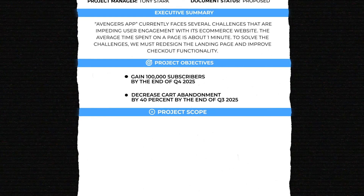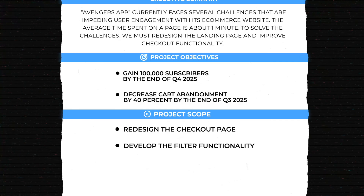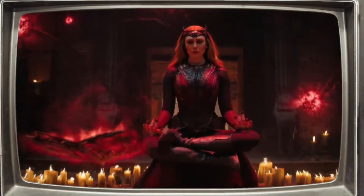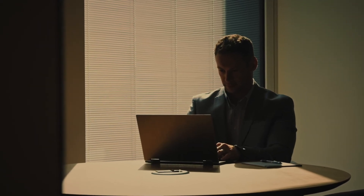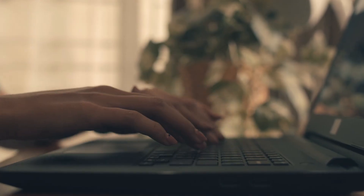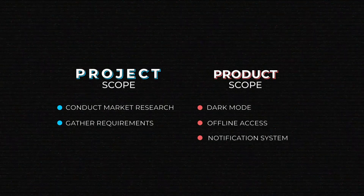Similarly, the software project scope can list tasks like 'redesign the checkout page,' 'develop the filter functionality,' or 'integrate with the review platform.' You have to keep the balance — be detailed enough to cover all the tasks to be done, but avoid going down the rabbit hole of the smallest activities. Also, don't confuse Project Scope with Product Scope. The Project Scope is broader and might include pre-development tasks like 'conduct market research' and 'gather requirements,' while a Product Scope is basically a list of features to be developed.